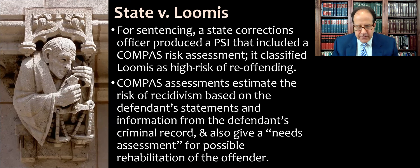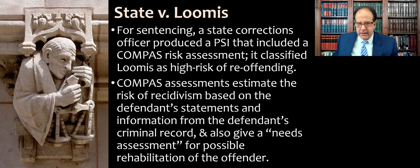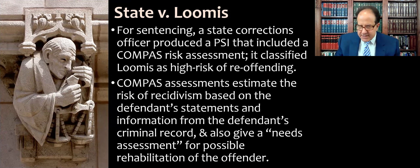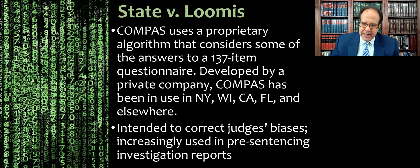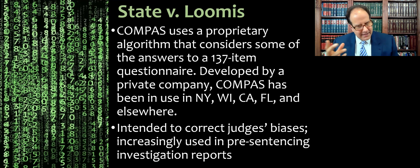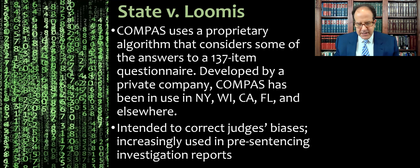For sentencing, a state corrections officer produced a pre-sentencing investigation report that included a Compass risk assessment, and that classified Loomis as high risk of re-offending. Compass risk assessments estimate the risk of recidivism based on the defendant's statements, answers to a questionnaire, and information from the defendant's criminal record. It also gives a needs assessment for possible rehabilitation of the offender. Compass uses a proprietary algorithm that considers some of the answers to a 137-item questionnaire. It was developed by a private company and has been used in New York, Wisconsin, California, Florida, and other jurisdictions. It's intended, in theory, to correct for judges' biases, and it's increasingly used in these pre-sentencing investigation reports.